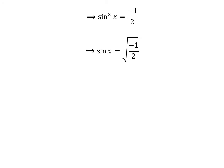For no value of x, sin x can be a complex number. So, no solution exists for 2 sin x plus csc x equals 0 in the interval 0 to 2π.